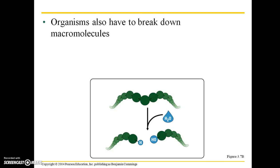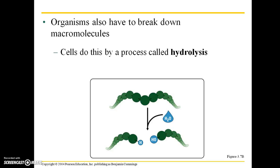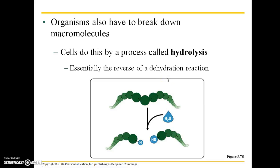Organisms also have to break down macromolecules. In our day-to-day lives, we do this whenever we eat — we take in proteins, fats, and sugars, and we have to break those macromolecules down into smaller subunits usable by our bodies. Cells do this by a process called hydrolysis. Hydro refers to water; lysis means to break. This is essentially the reverse of a dehydration reaction. Water is added to a long polymer — a hydroxyl group attaches to one section and a hydrogen attaches to another — and thus the long polymer is broken into two smaller pieces.